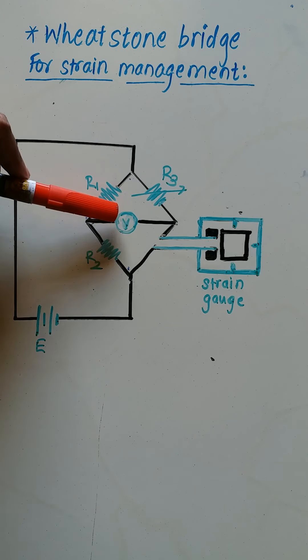Now, when the strain gauge is stretched or compressed, what happens? The length and diameter of metal conductor changes. And therefore, there is change in its resistance. And change in its resistance causes unbalanced condition of Wheatstone bridge. And this voltmeter shows some deflection, and we come to know that now this Wheatstone bridge is unbalanced.